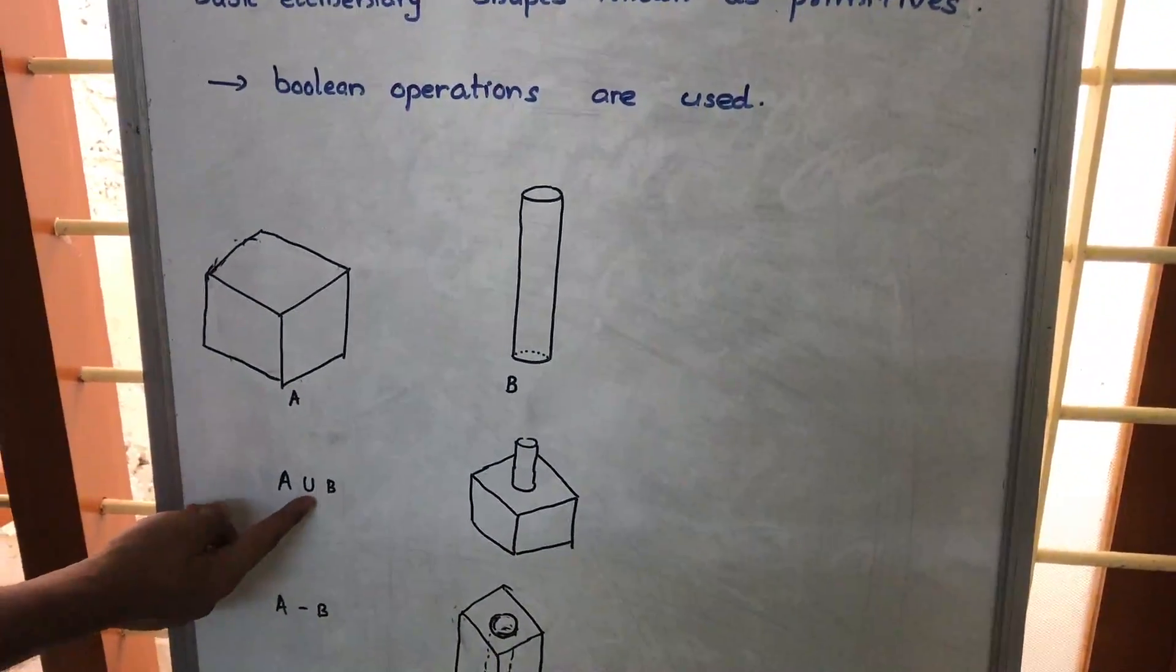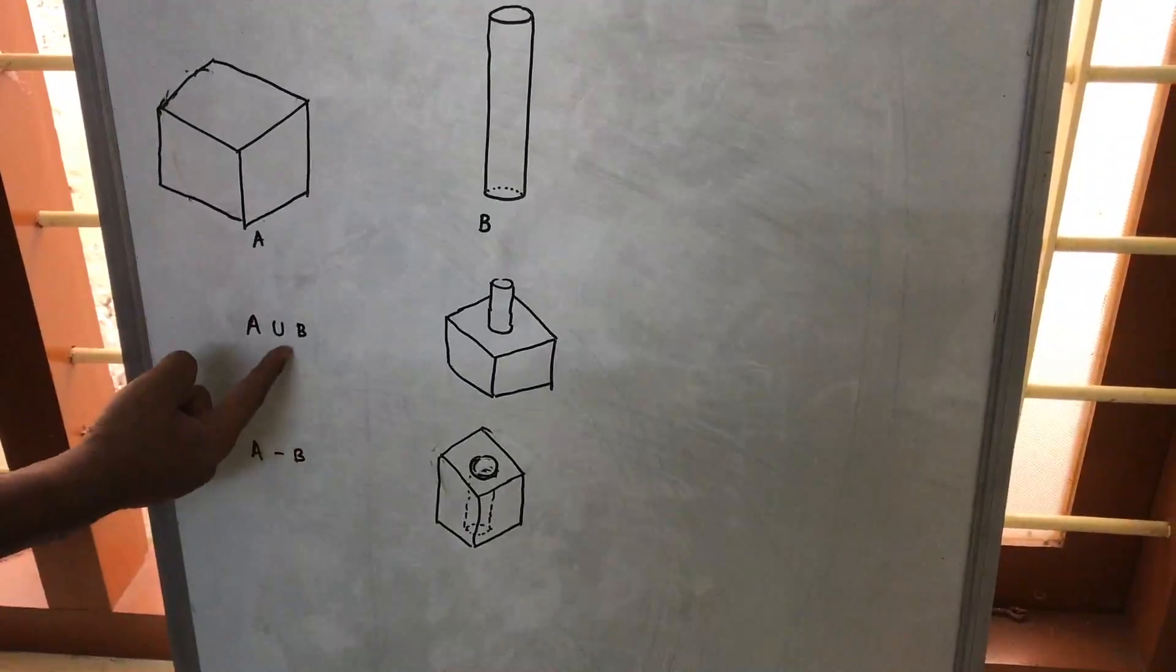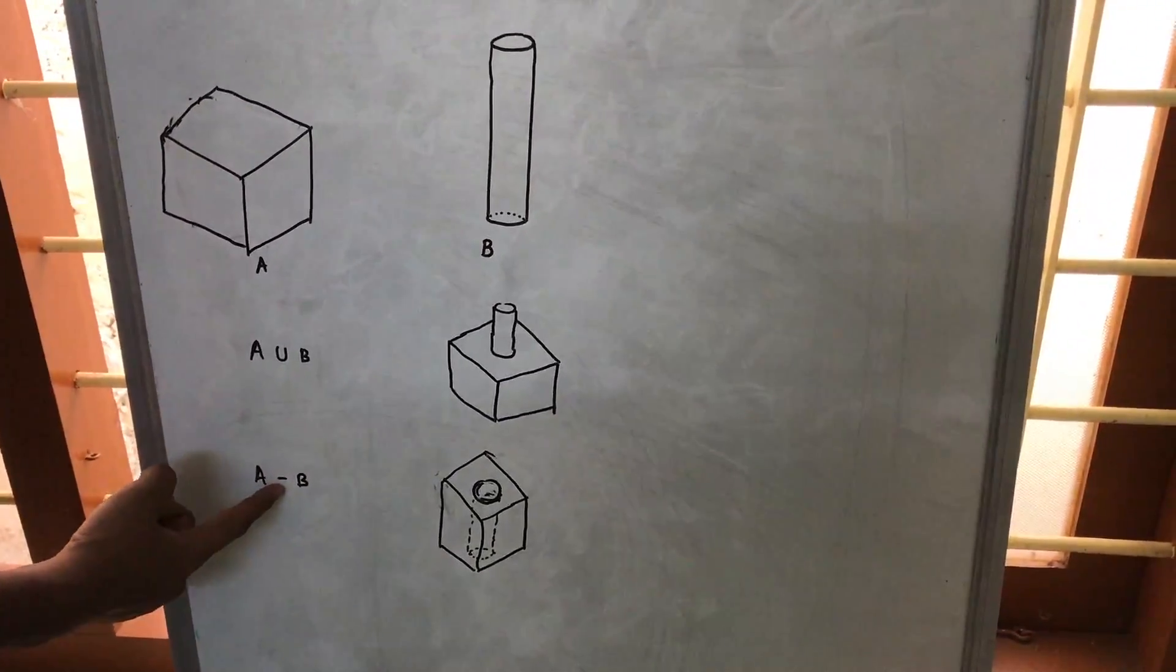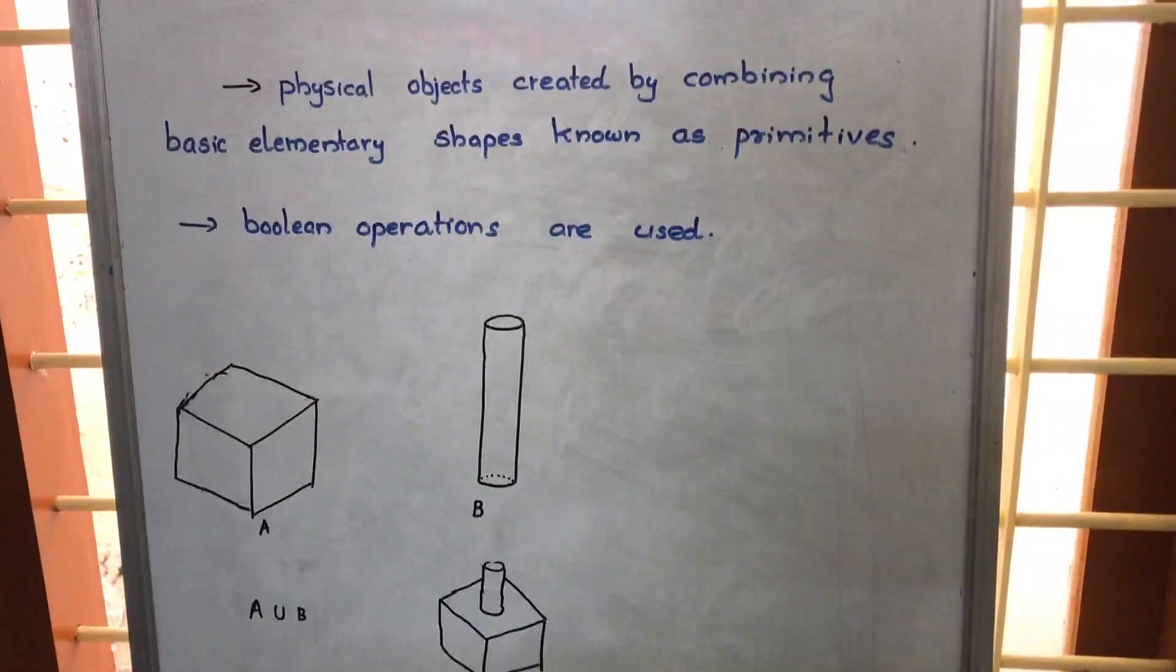This is how these two primitives are used to get two different geometries by using Boolean operations. Here union, and here a difference. That's what we call Constructive Solid Geometry.